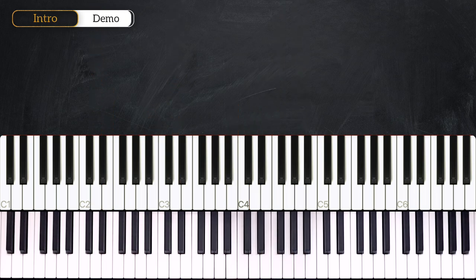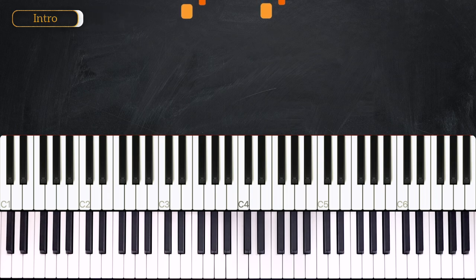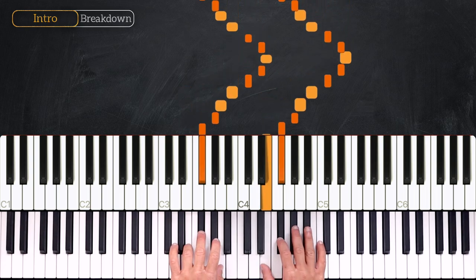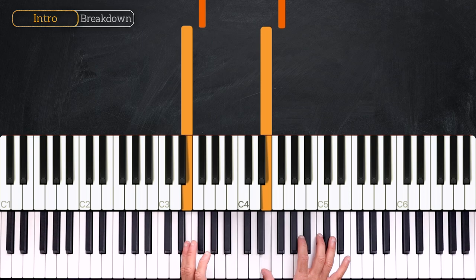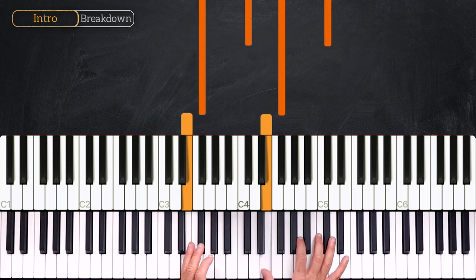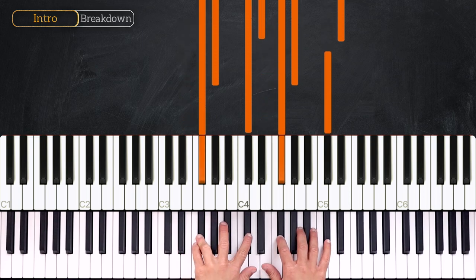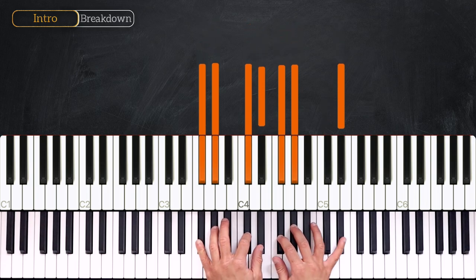Alright guys, in this first part we are going to learn the introduction. We are in the key of E major, so we have four sharps: F sharp, C sharp, G sharp, and D sharp.